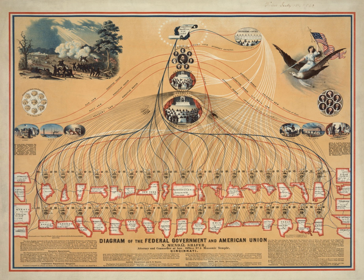Therefore, there are often great differences in law and procedure between individual states, concerning issues such as property, crime, health and education, amongst others. The highest elected official of each state is the governor. Each state also has an elected state legislature — by bicameralism as a feature of every state except Nebraska — whose members represent the voters of the state. Each state maintains its own state court system. In some states, Supreme and lower court justices are elected by the people; in others, they are appointed, as they are in the federal system.